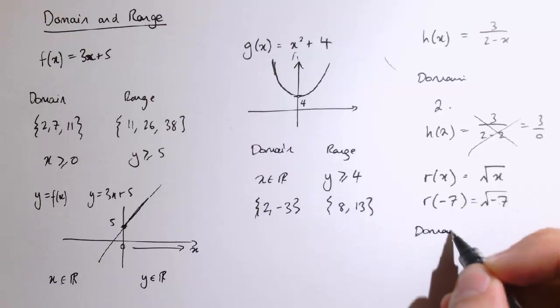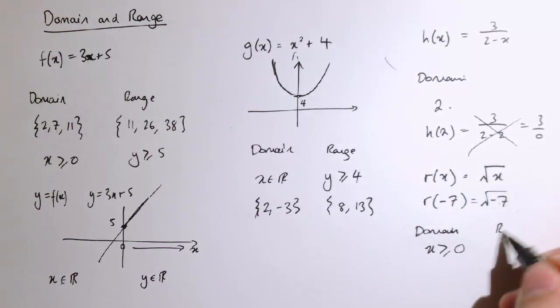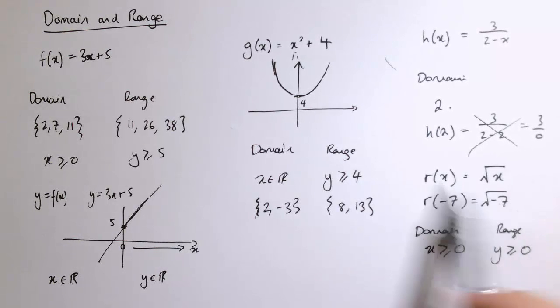The biggest domain I could have here would be x greater than or equal to 0, and the range of values I'd get there is y greater than or equal to 0, because this means the positive square root.